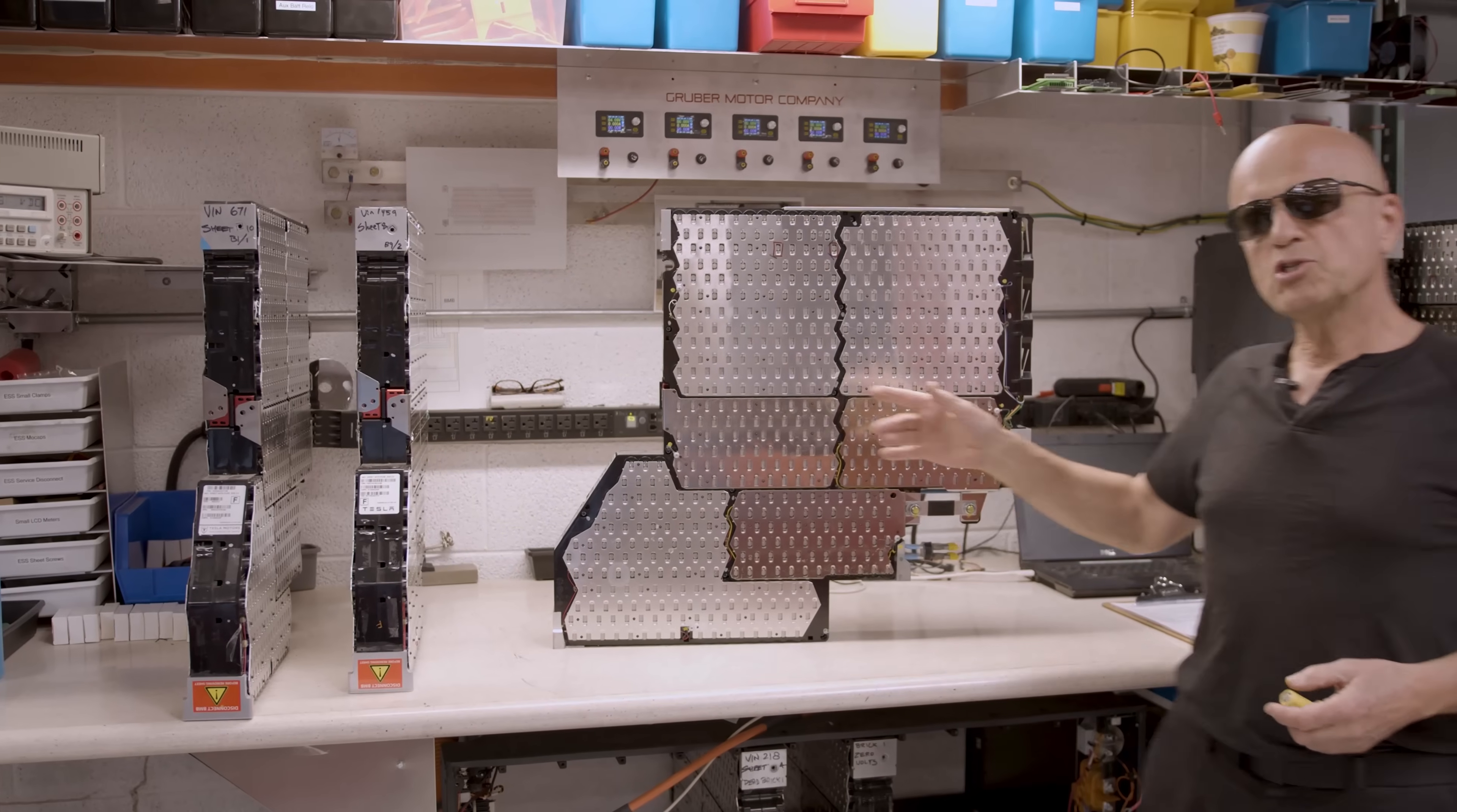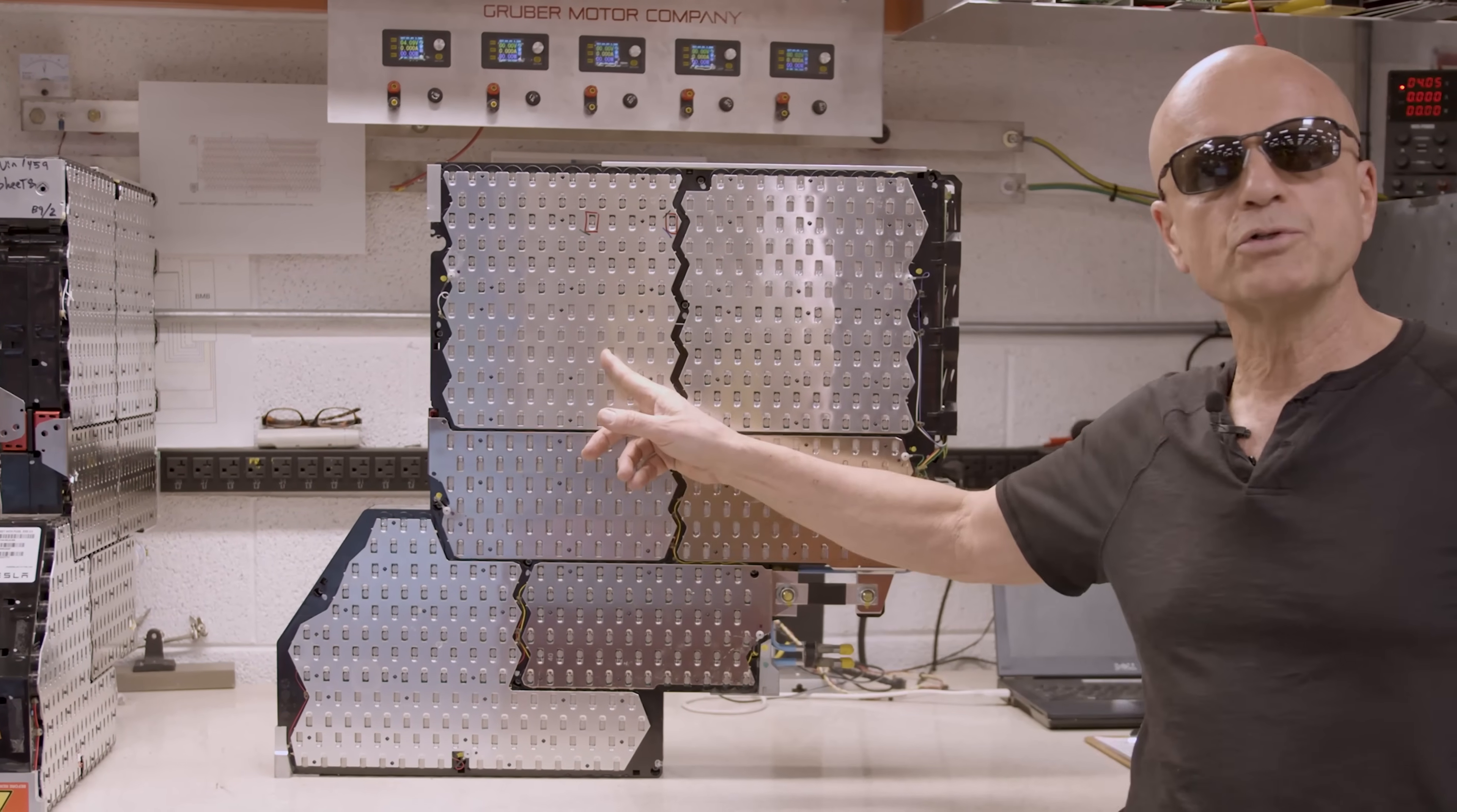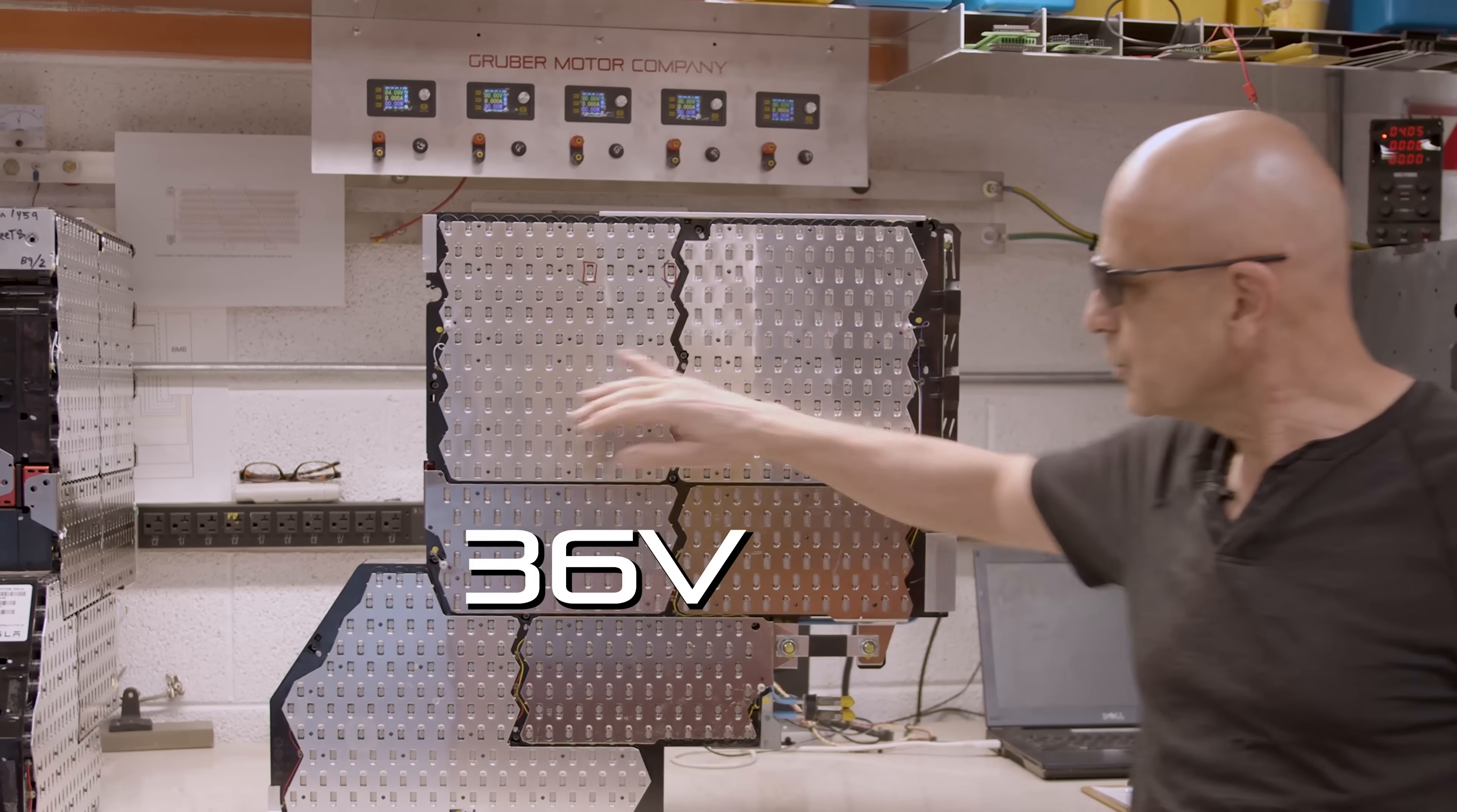Inside each sheet there are nine bricks, which is a collection of 69 of these cells connected in parallel. When you connect batteries in parallel the voltage remains the same, 4 volts DC in this case, but the power available is additive and increases with each cell added. The bricks, all nine of them, are then connected in series and the sheet voltage ends up being around 36 volts.